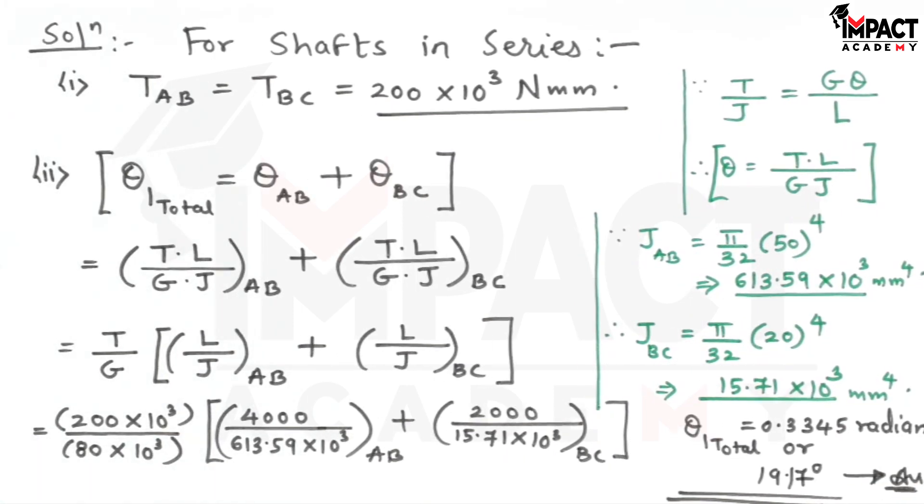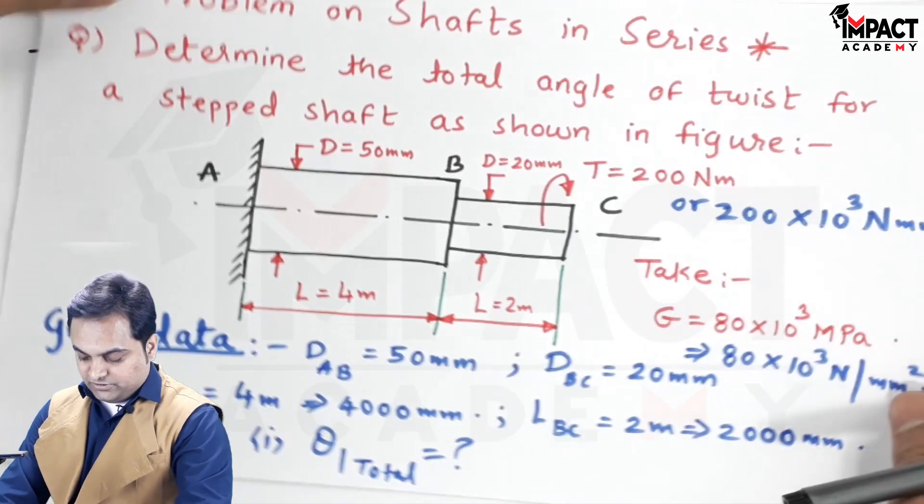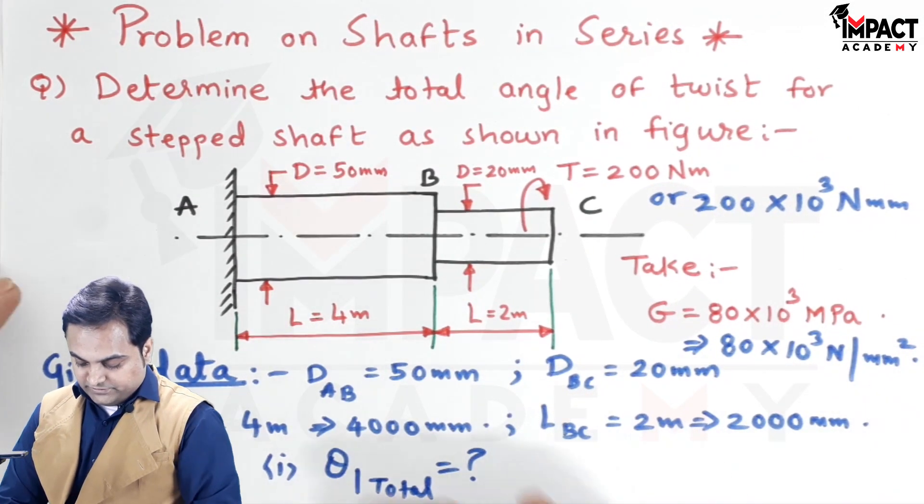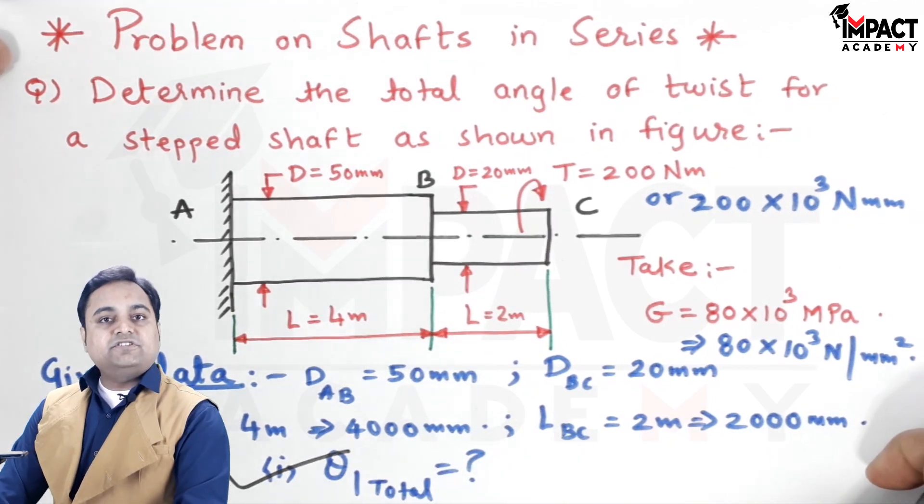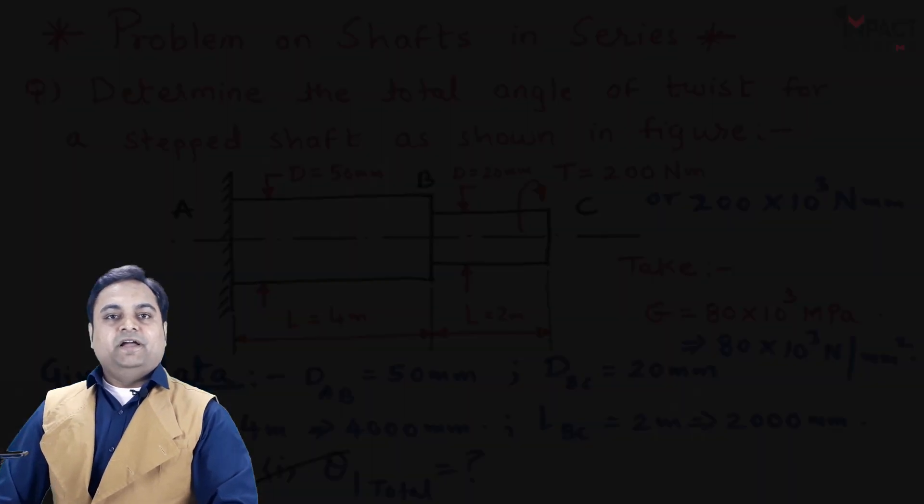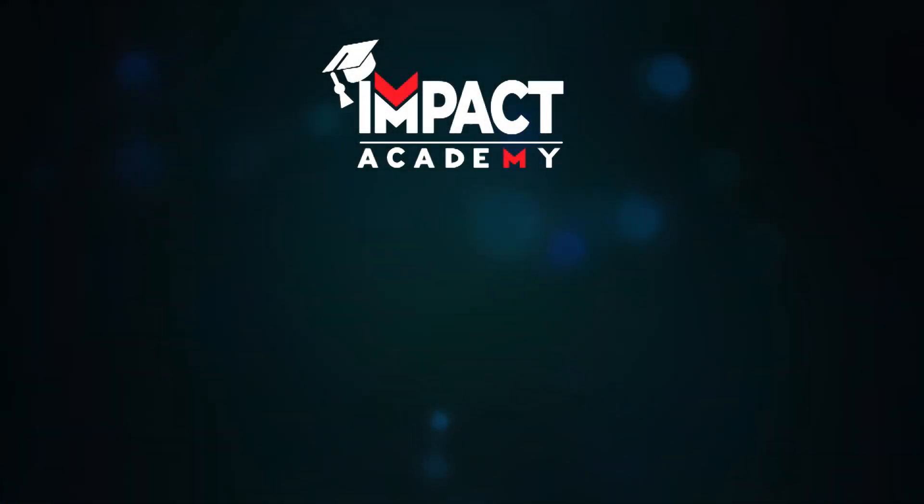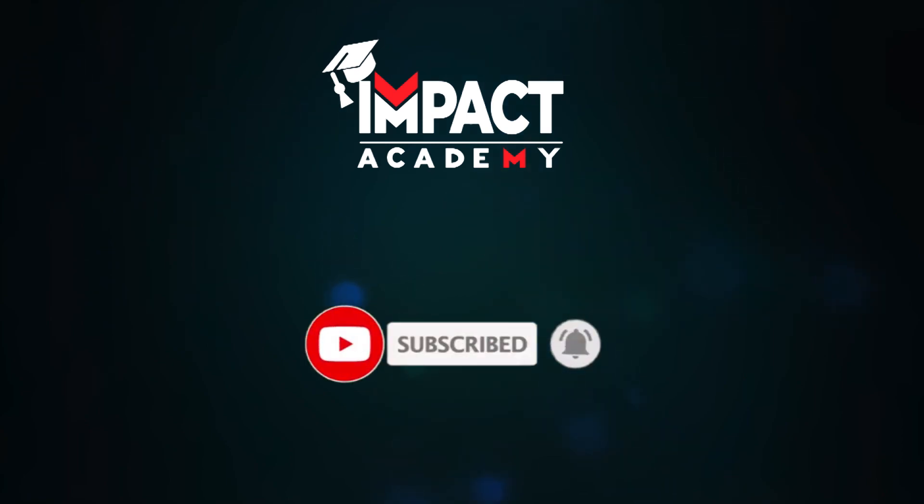As per the question, we have to find the total angle of twist for shafts in series, and we have calculated it. With this, the problem gets completed. If you find my videos helpful, you can like, share, comment, and subscribe to our channel. Thanks for watching.